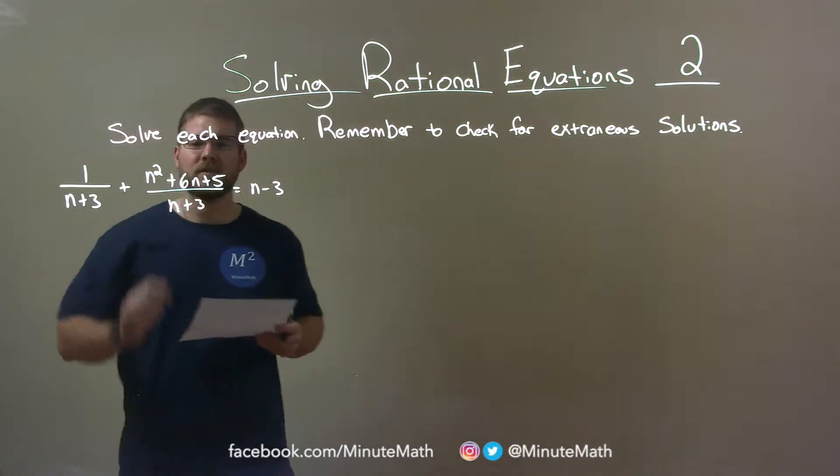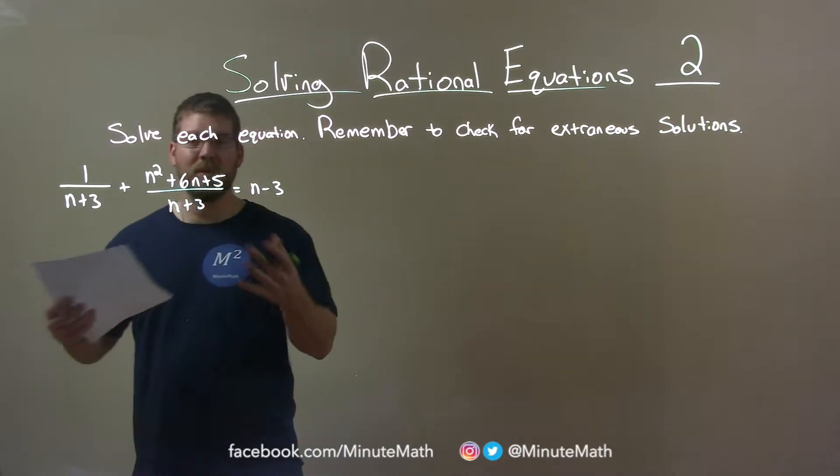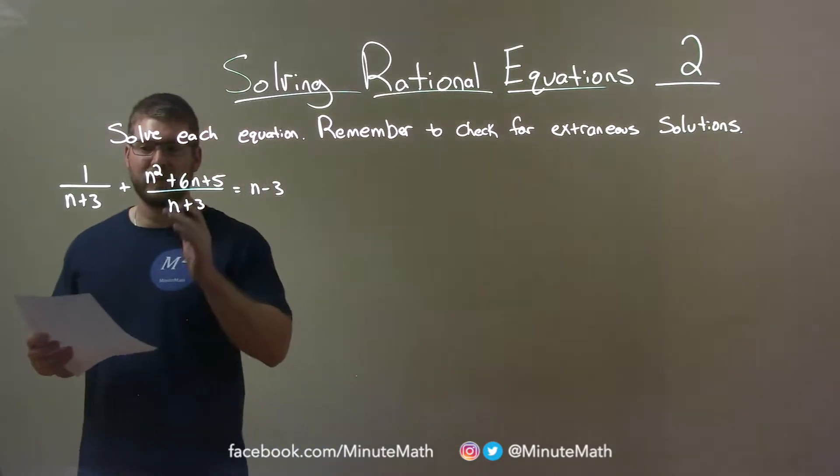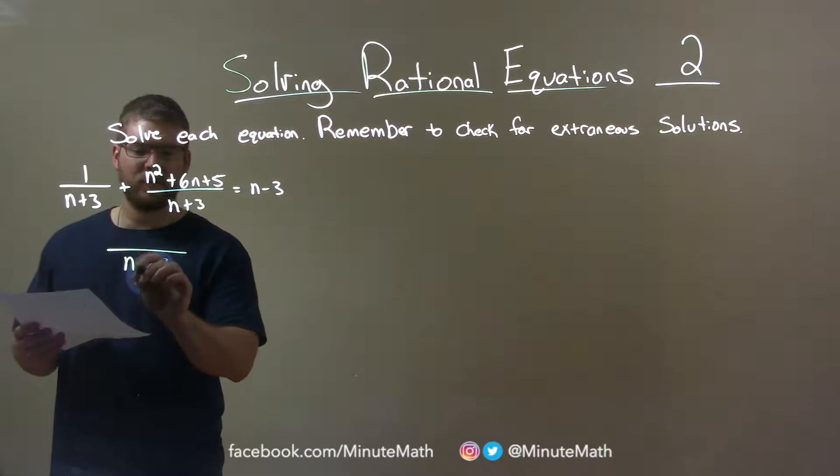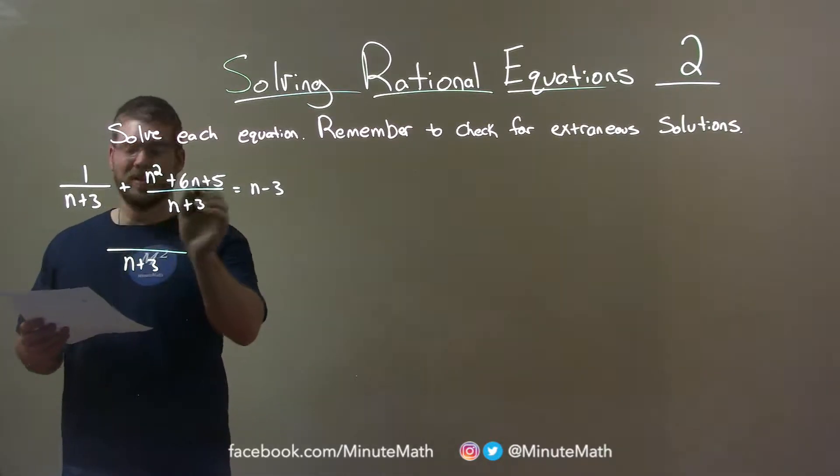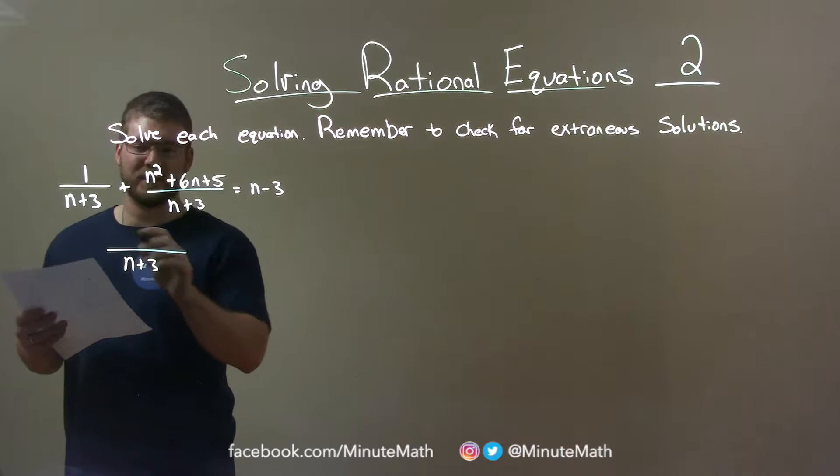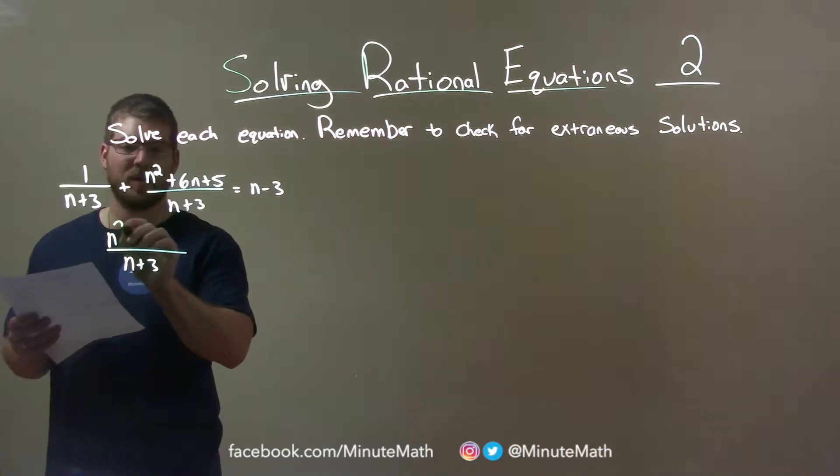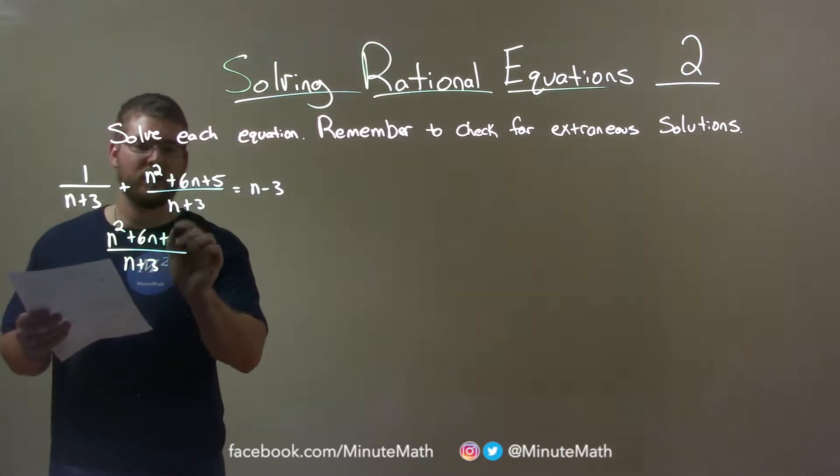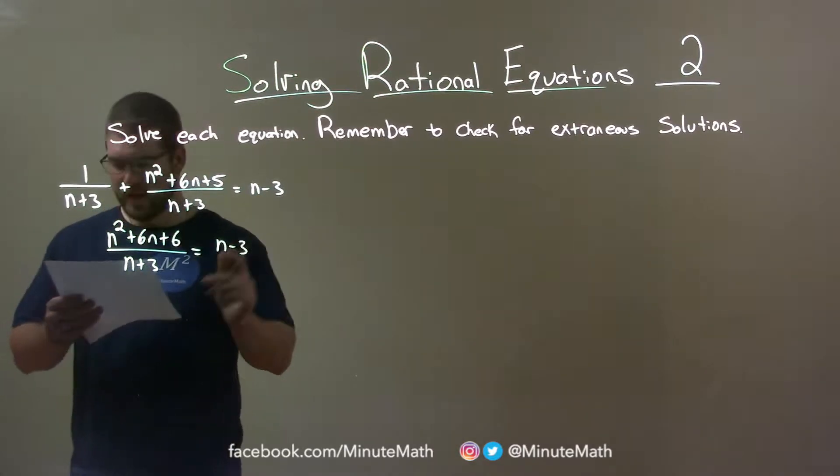Alright, the left side here, we had the same denominator, so we can combine that to one big fraction. So, we have n plus 3 in the denominator, and really we just add the numerators, and the only like terms to add are 1 and 5 which makes 6. So, we have n squared plus 6n plus 6, equals n minus 3 here.